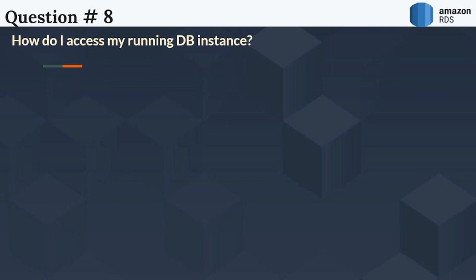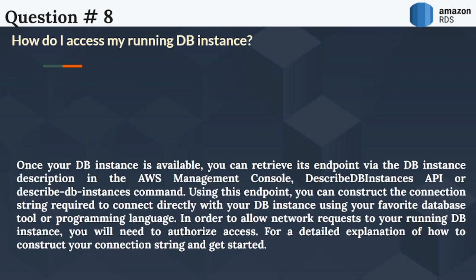The next question is: How do I access my running DB instance? Once your DB instance is available, you can retrieve its endpoint via the DB instance description in the AWS management console, the DescribeDBInstances API, or describe DB instances command. Using this endpoint, you can construct the connection string required to connect directly with your DB instance using your favorite database tool or programming language. In order to allow network requests to your running DB instance, you will need to authorize access.